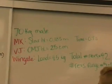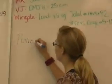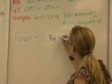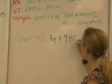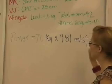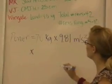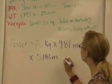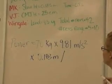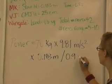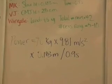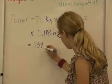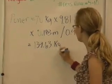to get up the stairs, his power would be equal to 70 kilograms times 9.81 meters per second squared times the stair height in meters, which was 0.183 meters divided by the time in seconds it took him to get up, so 9 seconds. And this is equal to 139.63 watts.